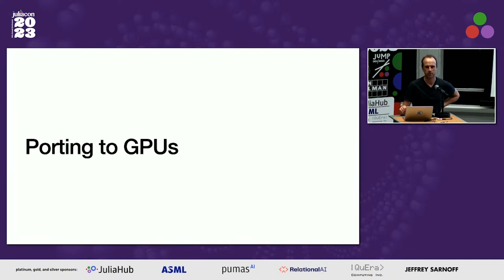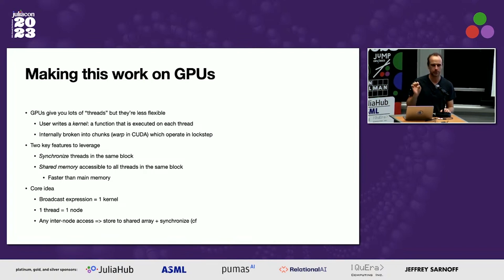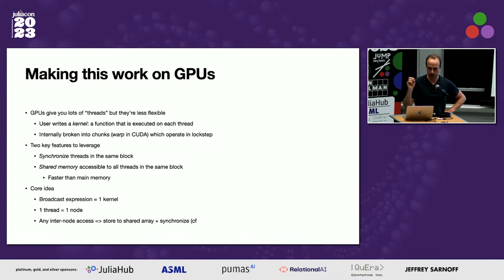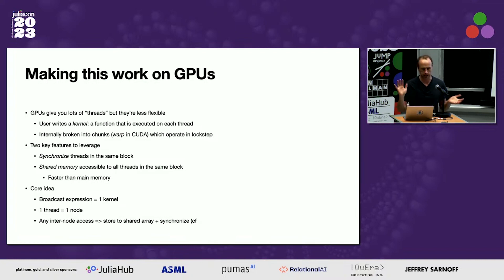How do we do this on GPUs? My heuristic explanation: GPUs give you lots of threads, but they're much less flexible. Rather than writing a for loop, you write a function called a kernel, which you tell the GPU to execute. A kernel is a function executed on a single thread. The GPU internally breaks that up into chunks — CUDA calls them warps — which operate in lockstep, with some fancy scheduling. There are multiple layers to this, but basically you're writing something that gets polled multiple times and may run slightly asynchronously.